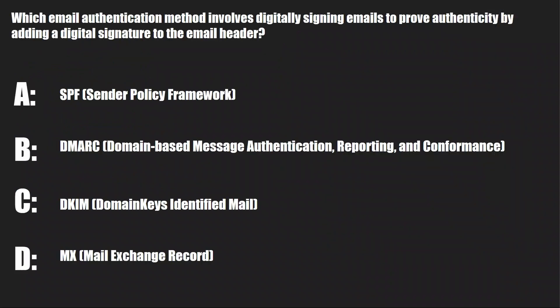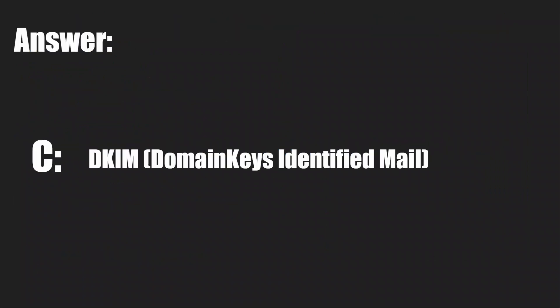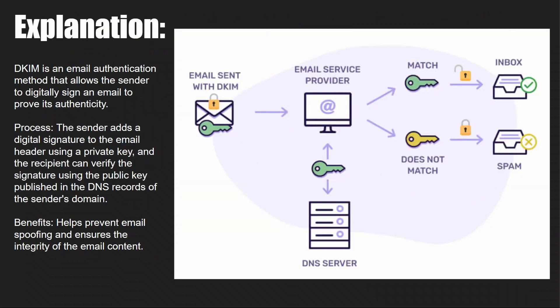Question number two: Which email authentication method involves digitally signing emails to prove authenticity by adding a digital signature to the email header? A: SPF. B: DMARC. C: DKIM. Or D: MX. The answer is C, DKIM — Domain Keys Identified Mail. These are three really important concepts you want to get your head around.